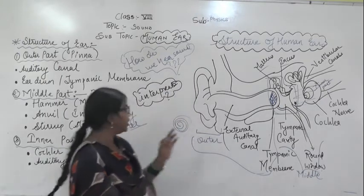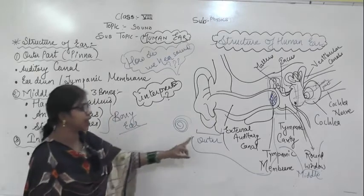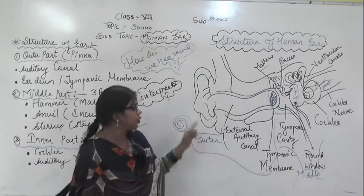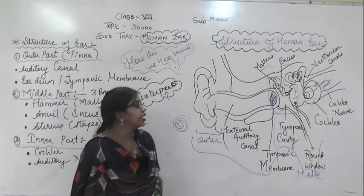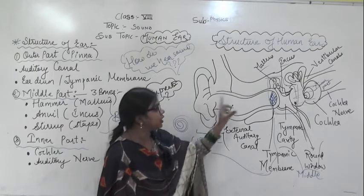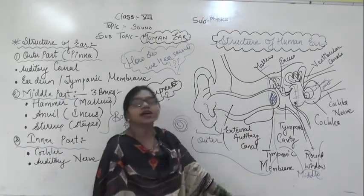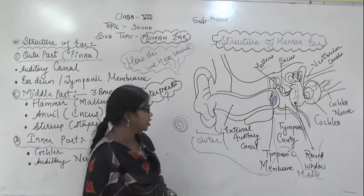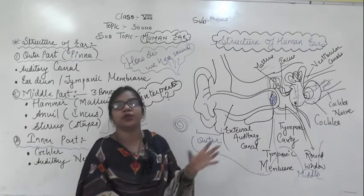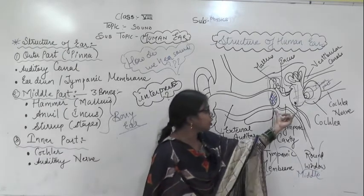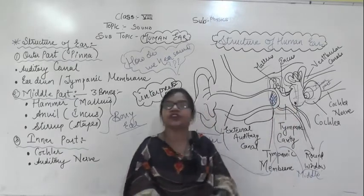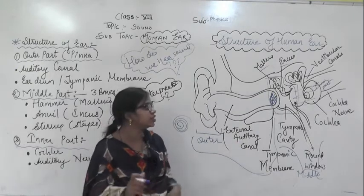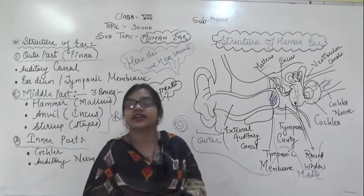So in summary, in the human ear we first have the outer part known as the pinna. From the pinna, a tube-like structure goes inside known as the external auditory canal. At the end of the outer part, the eardrum — also known as the tympanic membrane — is located. After this it enters the middle part, which is surrounded by three types of bones, making it the bony part. Then it enters the inner part where you find the cochlea, a coil-like structure surrounded by different nerves.